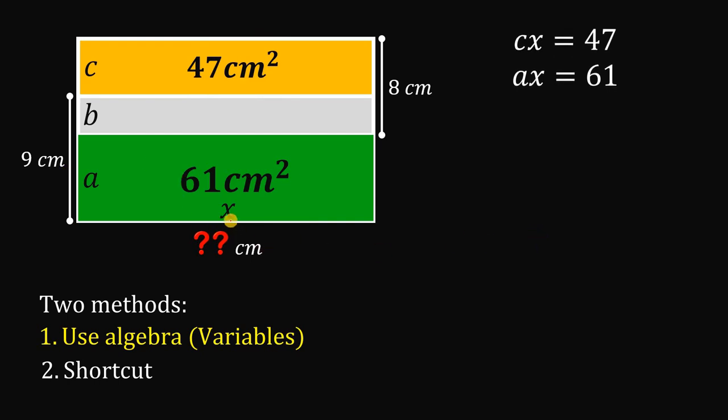And then, let's use another one. Let's make another equation. This 9 multiplied by x, this will give us two regions. We have ax and bx. So, we can say that 9x must be equal to these two regions. We have ax plus bx.